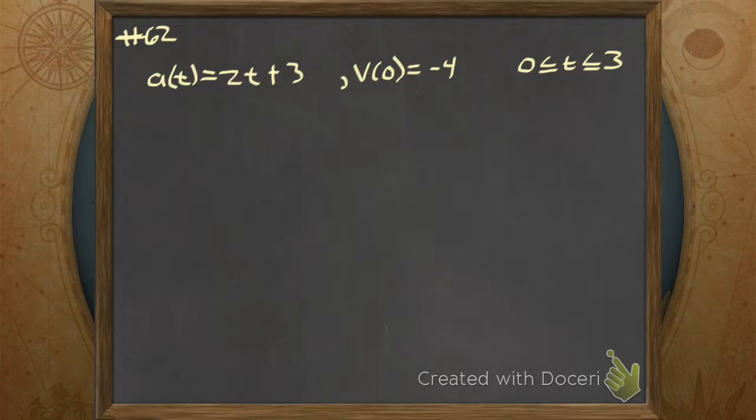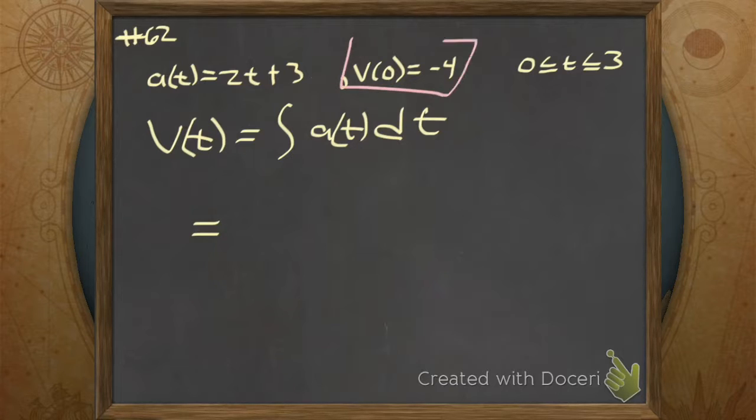In this problem they give us the acceleration, they want us to find the velocity function and then the net change in position or the distance traveled. In order to find the velocity, v(t), that's the integral of a(t) dt. So let's go ahead and integrate that, and then we're going to use this constraint in order to find our C.